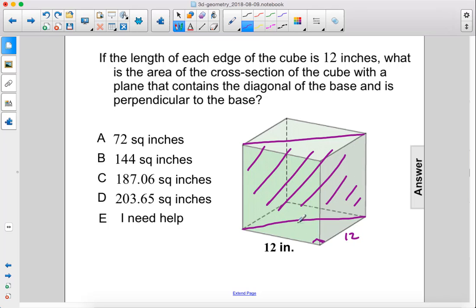so this length of the diagonal is 12 times the square root of 2, since in a 45-45-90 triangle we have 12, 12, 12 times the square root of 2.